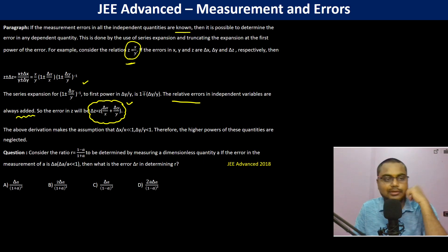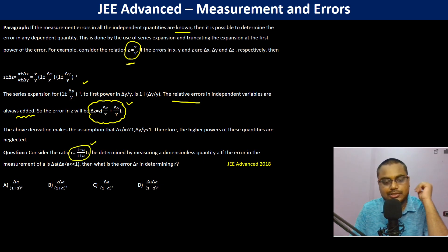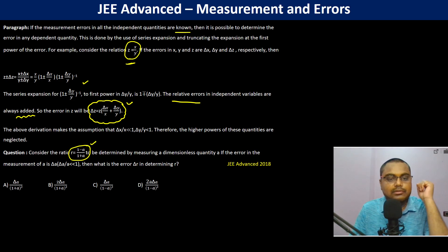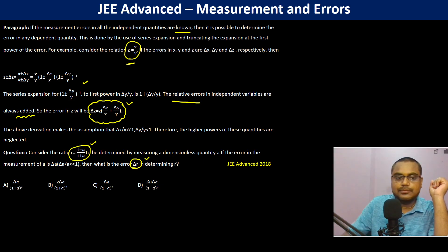So let us solve this for the following ratio. What we have to do is find delta R. Consider the ratio R equals 1 minus A by 1 plus A, and we have to calculate the error delta R.